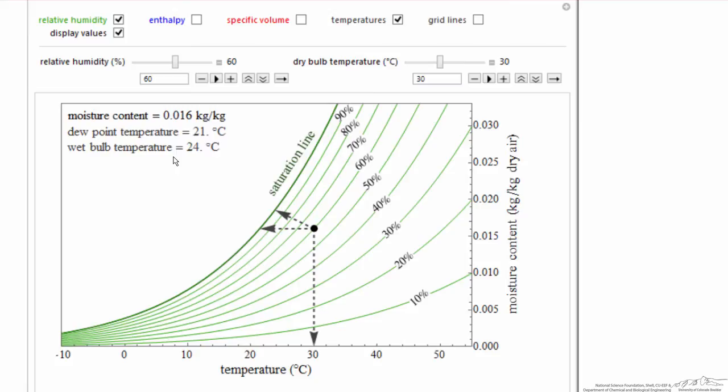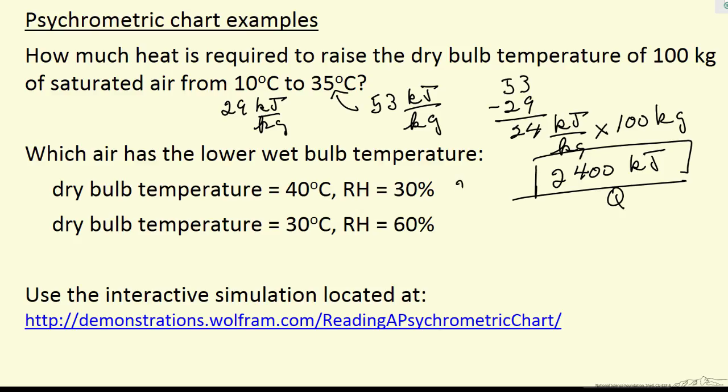So they almost have the same wet bulb temperature, very different conditions. But I've lowered the temperature and raised the humidity, so the wet bulb temperature is 24 degrees. Let's write those down. So the wet bulb temperature, this condition, 25 degrees C. Here almost the same, 24 degrees C. So both temperature and humidity of course affect the wet bulb temperature.